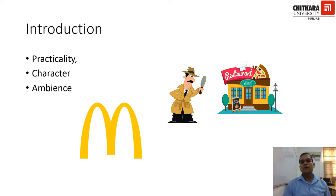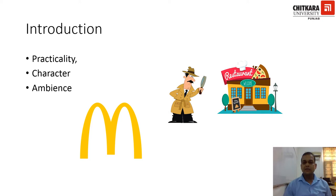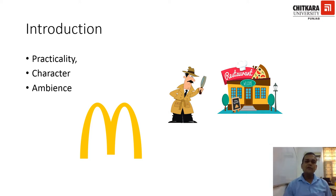Looking at the picture, there is a detective with a magnifying glass searching the restaurant — similar to a guest nowadays who prefers to choose a restaurant to dine in, keeping in mind the practicality, ambience, character, menu quality, and social media reviews. On the left-hand side you can see 'M Britain,' a trademark, and every restaurant has a trademark by which customers choose where to go.